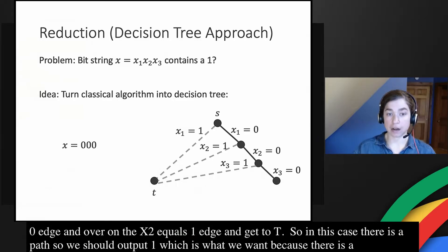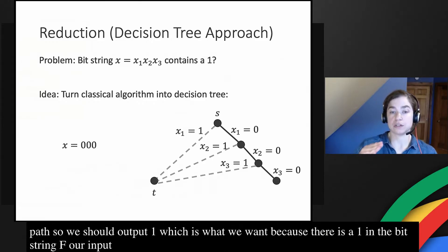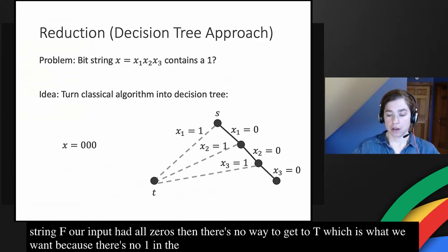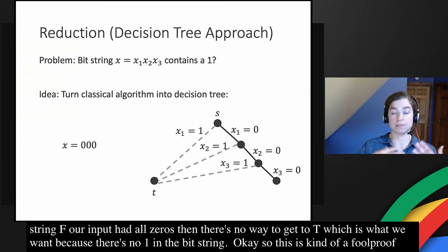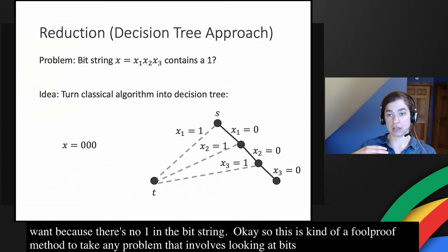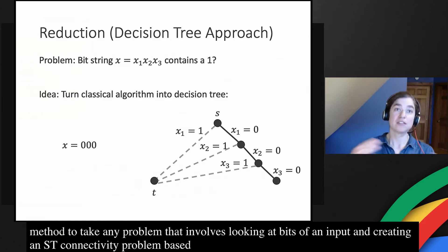On the other hand, if our input had all zeros, then there's no way to get to t, which is also what we want because there's no one in the bit string. So this is kind of a foolproof method to take any problem that involves looking at bits of an input and creating an ST connectivity problem based on whatever problem you're trying to solve regarding those bits.